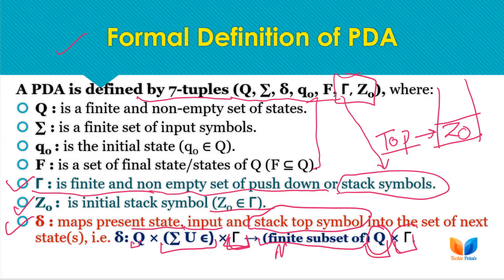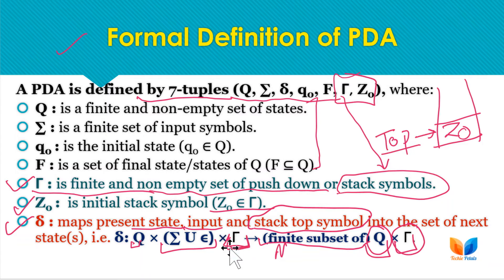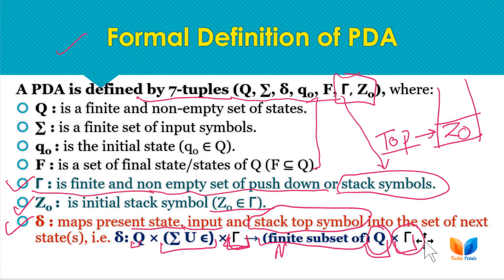As a result of a transition, we can move to any state and also replace the stack top symbol. We can replace the stack top with a new symbol, the same symbol, or a string of symbols. Let's now check what the possible moves of PDAs are, and then we will consider one example using all those moves.